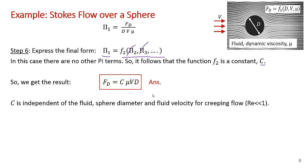I'm going to call it C. And we get that the drag force equals CμVD, which looks a lot like Stokes' famous result. And it's interesting that the constant C here is independent of the fluid type that you do the experiment in. It's independent of the sphere diameter. And it's independent of the fluid velocity provided you have very low velocity flow, so-called creeping flow.